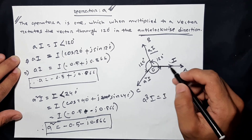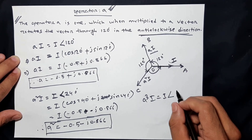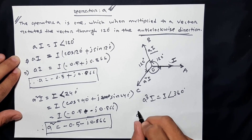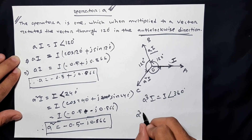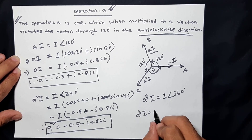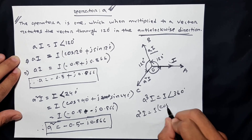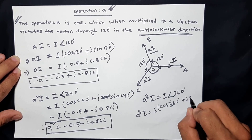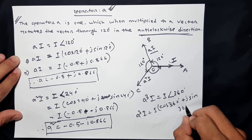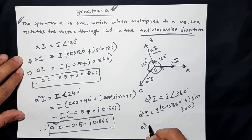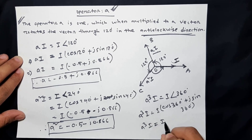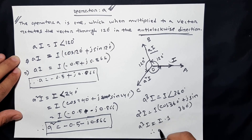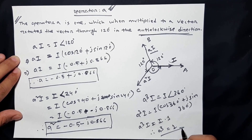120 plus 120 plus 120 equals 360 degrees. So the angle is 360 degrees. Therefore A cubed equals cos 360 degrees plus j sin 360 degrees, which equals 1. So A cubed equals 1 — this is important.